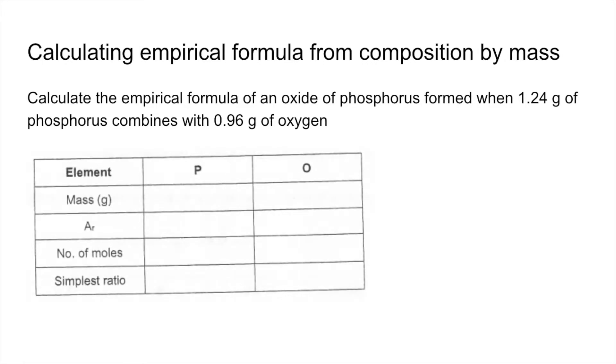OK, so I always get my students to put their answers in a table and follow those four steps that you can see down the left hand side. So the first thing I'm going to do is put the mass in grams of phosphorus and oxygen in the compound. Then we're going to put the relative atomic mass of the atoms in the table.